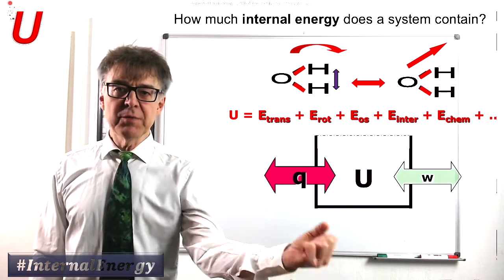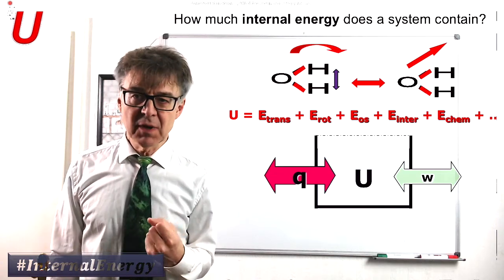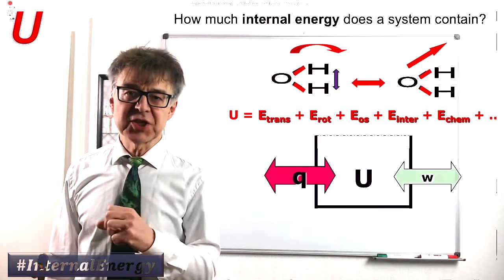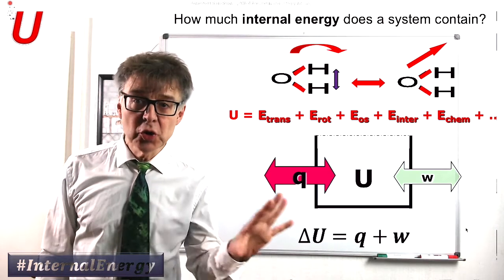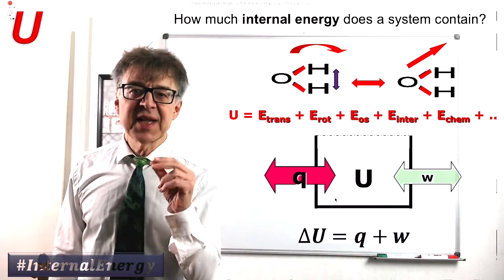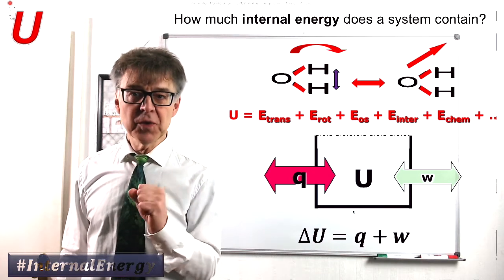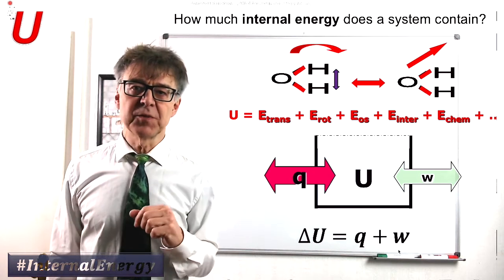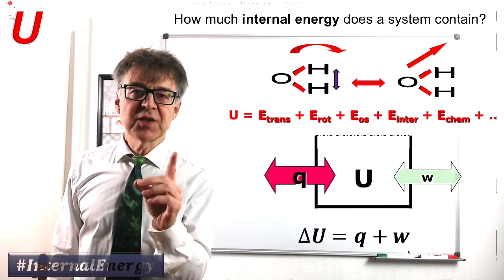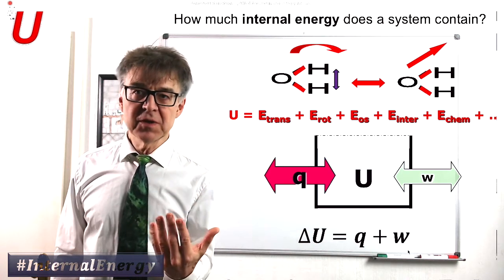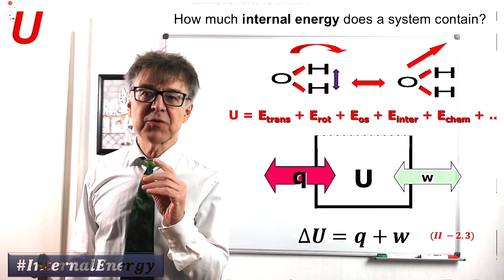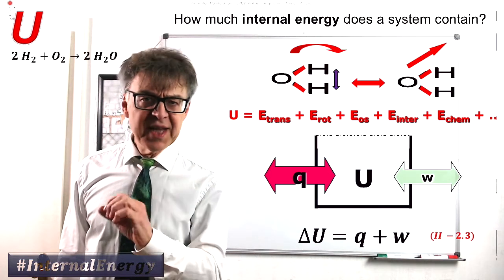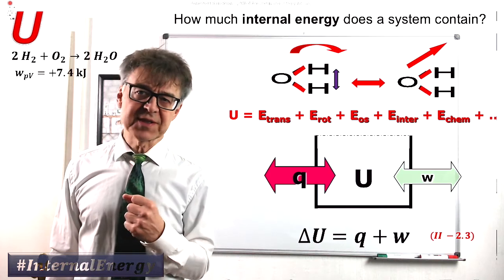Whenever we add or remove energy from a system, the internal energy changes. These inputs and outputs of energy to or from a system can take place as heat q or as work w. So if we are to calculate delta u for the oxyhydrogen reaction, we simply have to add up all the heat and work values of this reaction.